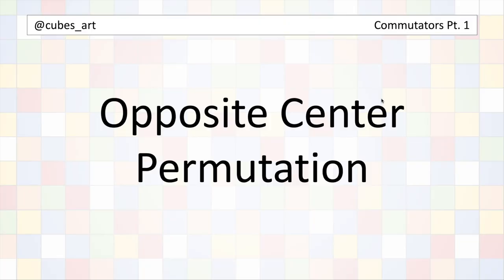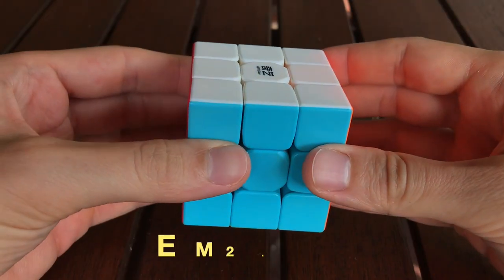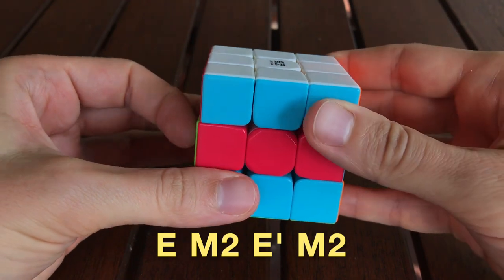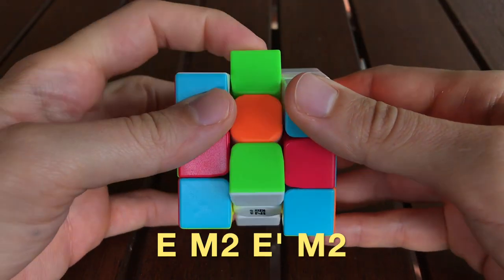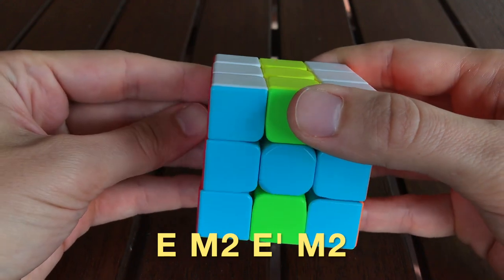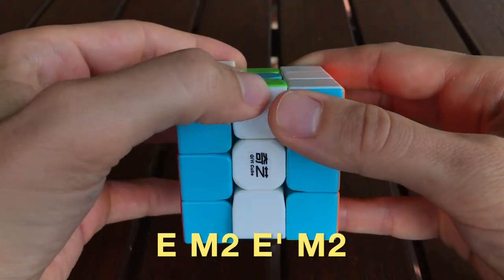The next algorithm I discuss permutes two pairs of centers that are opposite each other. The moves for this algorithm are E, M2, E', and M2.